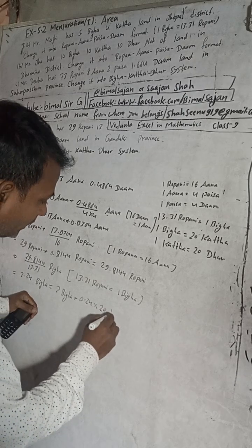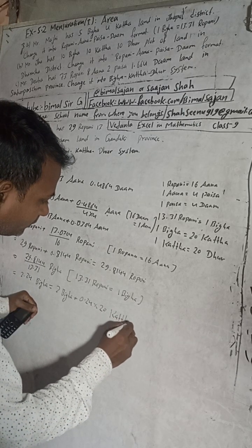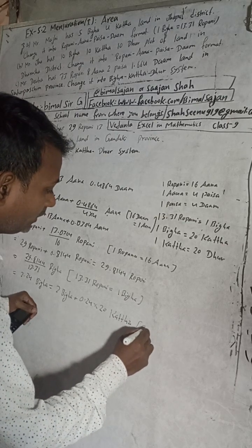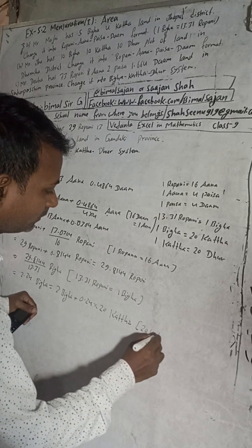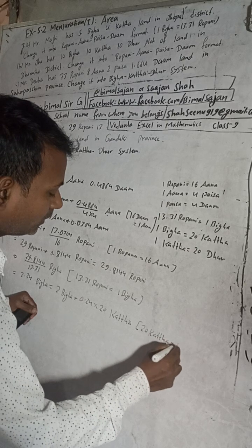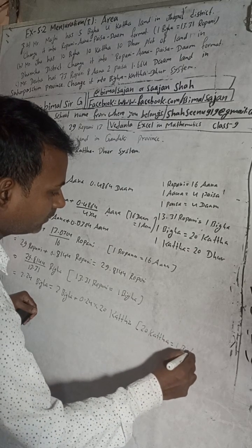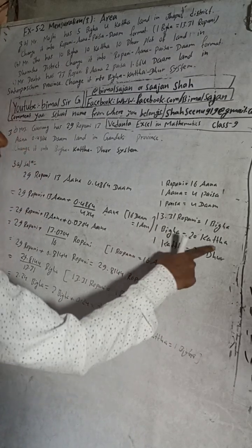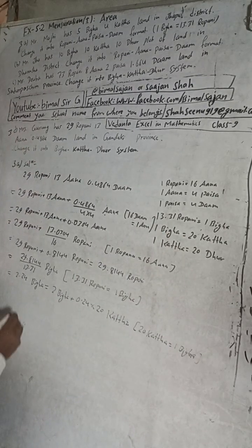The reason for this is 20 Katha is one bigaya. 20 Katha is called one bigaya.